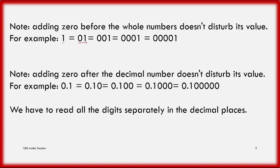0.1 seems to have 2 digits before the decimal, but those leading zeros don't have any meaning — they are all equal to 1. Note: Adding zeros after a decimal number also doesn't change its value. For example, 0.1 equals 0.10 equals 0.100.